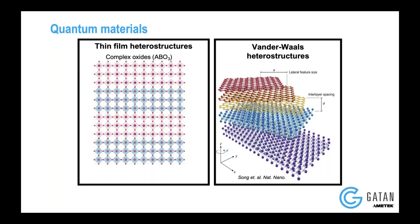In terms of quantum materials, there are very different types. I'll be talking about two kinds today. One is a thin film heterostructure where you can grow these materials atom by atom using pulsed laser deposition, which is precise up to the atomic scale — you can even control a unit cell with pulsed laser deposition.